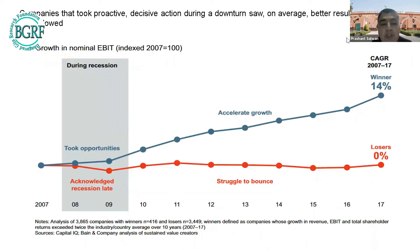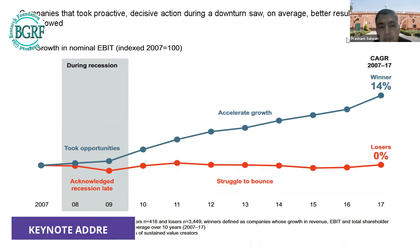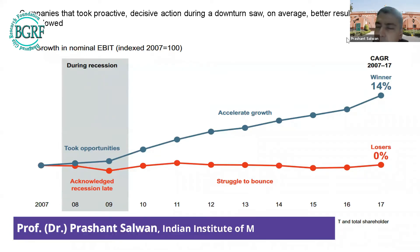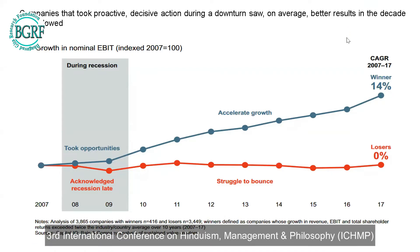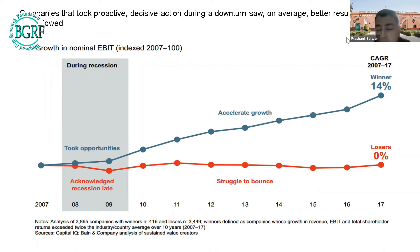A major study by Bain & Co took 3,865 companies and analyzed the 2008 and 2020 recessions. All 3,865 had the same earnings before income and tax, yet 14 percent did better while 86 percent could not bounce back. The difference was just a matter of months: the 14 percent recognized the opportunity and changed their business model early, achieving accelerated growth during the recession.